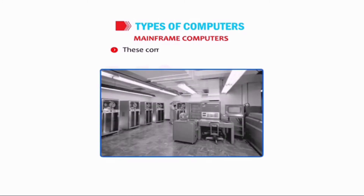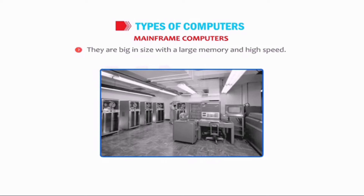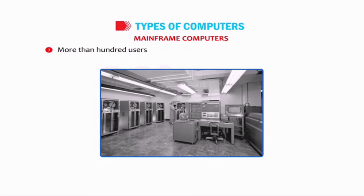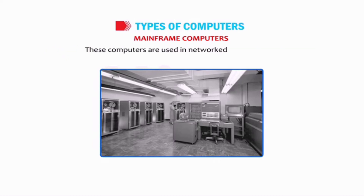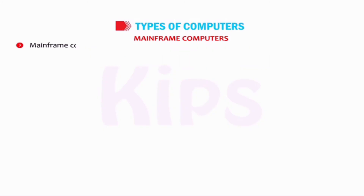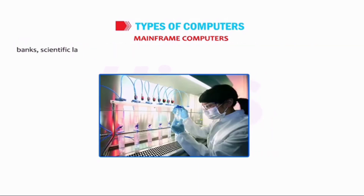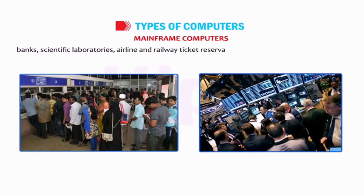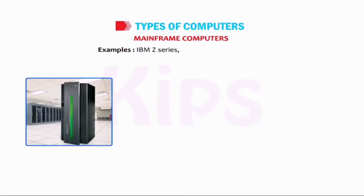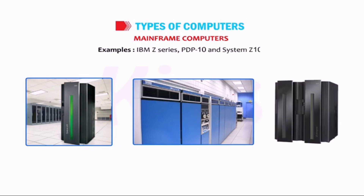Mainframe Computers: these computers are very powerful, big in size, with large memory and high speed. They are designed to tackle huge amounts of data, and more than 100 users can use a mainframe computer simultaneously. These computers are used in a networked environment and are very expensive. They are mainly used for bulk data processing in large business organizations, universities, banks, scientific laboratories, airline and railway ticket reservations, stock exchange markets, etc. Examples include IBM Z-series, PDP-10 and System Z-10.